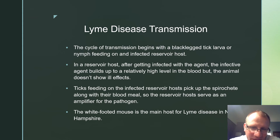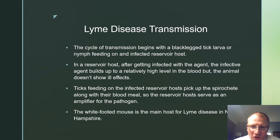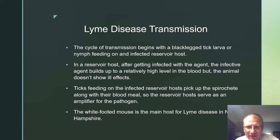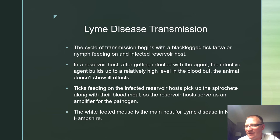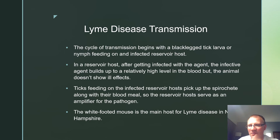The cycle of transmission begins with a black-legged tick larva or nymph feeding on an infected reservoir host. In the reservoir host, after becoming infected with the agent, the infectious agent builds up to a relatively high level in the blood, but the animal does not show ill effects. Ticks feeding on infected reservoir hosts pick up the spirochete bacterium along with their blood meal, so the reservoir host serves as an amplifier for the pathogen. The white-footed mouse is the main reservoir host for Lyme disease in New Hampshire.